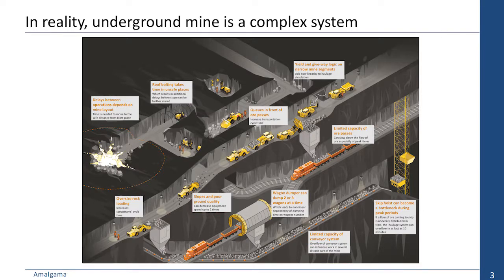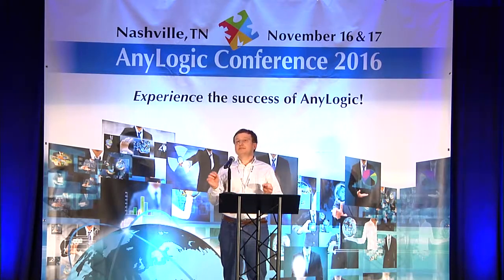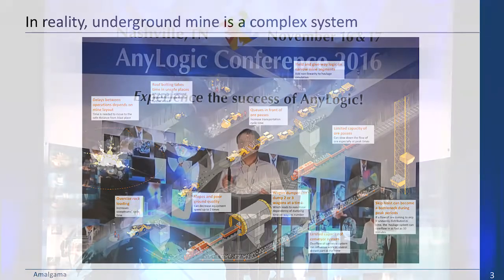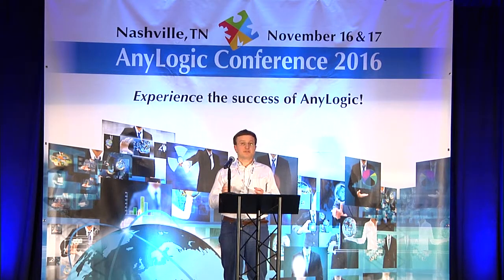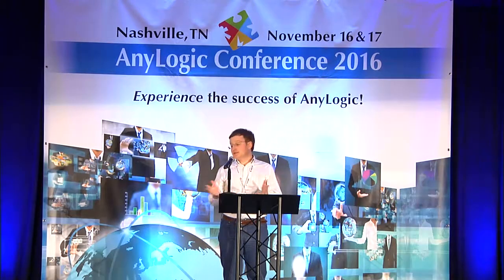In reality, underground mine is a more complex system where no subsystem is isolated and there are a lot of interdependencies. A typical example is evacuation for the time of blast. The distance of evacuation is always dependent on the mine layout and it's different from blast to blast. The time needed to do this evacuation is also different every time. Once the blast is done, we clean the ore from stopes, and the cycle times of dump trucks and scoop trams are never constant because of congestions in narrow parts of the mine and queuing in front of the ore passes.